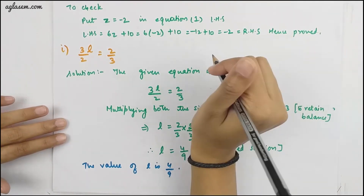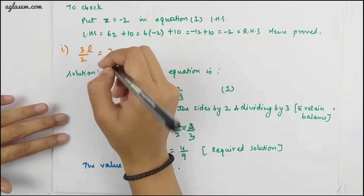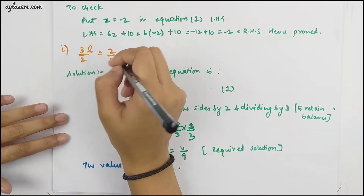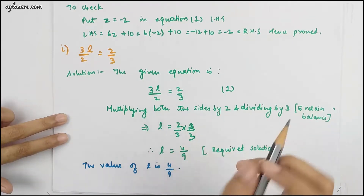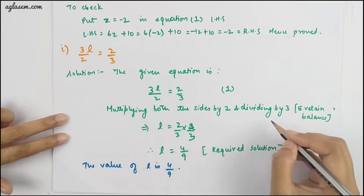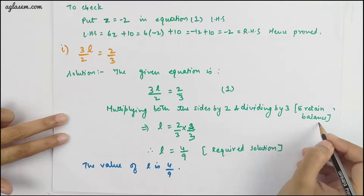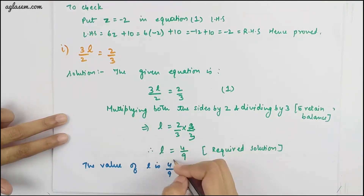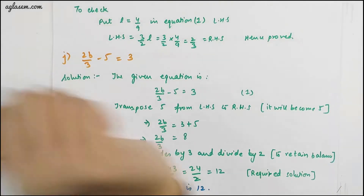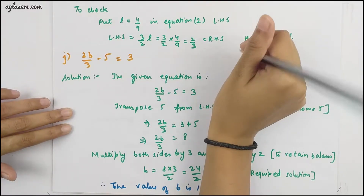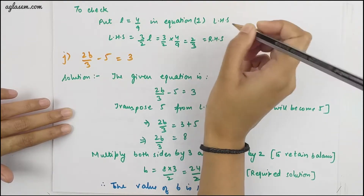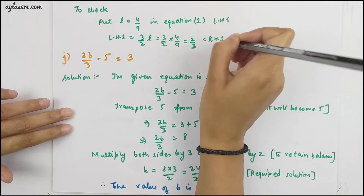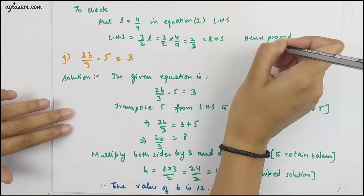The I part is 3L/2 = 3/2. Multiplying both sides by 2 and dividing by 3 to retain balance, we get the value of L = 4/9. To check, put L = 4/9 into the LHS — that equals the RHS. Hence proved.